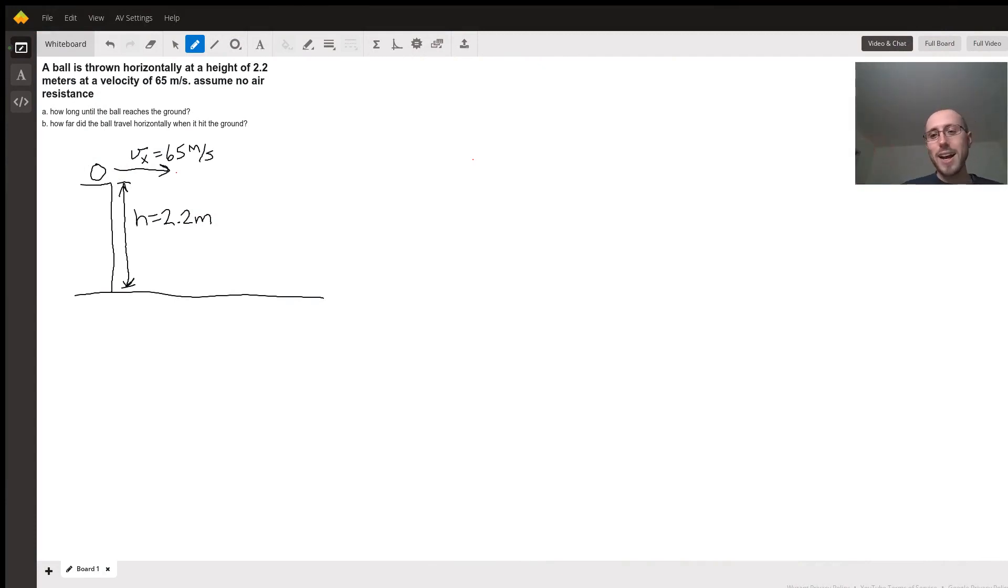Hey there, Michael here. Here to answer this question: a ball is thrown horizontally at a height of 2.2 meters at a velocity of 65 meters per second, assuming no air resistance.